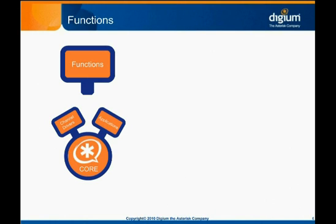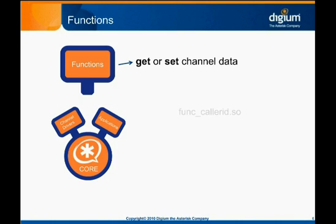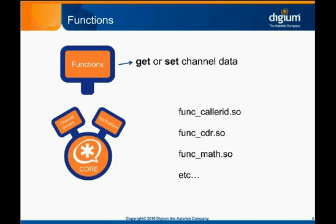Functions make up another class of Asterisk modules that relate to dial plan processing. Function modules offer another way of improving flexibility and control within the dial plan. While applications typically perform some action either on or to an Asterisk channel, dial plan functions typically get or set some data related to a channel, which may be used to improve logging or to dynamically change dial plan routing. Among other things, dial plan functions manage caller ID, CDR, or call detail records, and other channel variables. The format of file names that contain dial plan functions follows the same pattern as other modules. For the function called math, the file name is func_math.so.